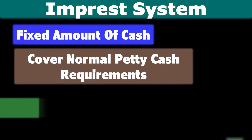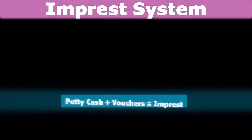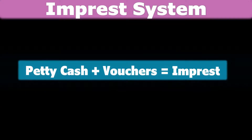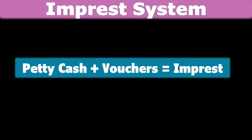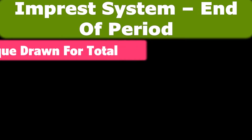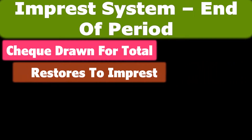This amount of petty cash is withdrawn from the bank, so at any time the total contents of the box — i.e. petty cash plus the amounts withdrawn represented by the vouchers — should equal the amount of the imprest. Thus, at the end of the period, a check is drawn for the total of the vouchers, which restores the petty cash flow to the amount of the imprest.